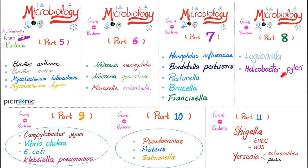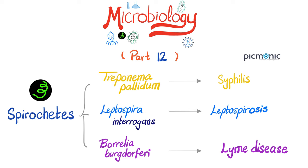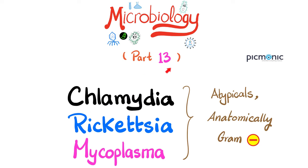H. pylori is an example of a bacterium that can lead to cancer. Do you know the viruses that can cause cancer? Comment below. In video number 9: Campylobacter jejuni, Vibrio cholerae, Escherichia coli, and Klebsiella pneumoniae. Video number 10: Pseudomonas, Proteus, and Salmonella. Video number 11: Shigella and Yersinia. Video number 12 was about the spirochetes — Treponema pallidum that causes syphilis. Keep that in mind because we'll talk about it today, especially congenital syphilis. Leptospira causes leptospirosis and Borrelia burgdorferi causes Lyme disease. And in the last video, number 13, we talked about Chlamydia, Rickettsia, and Mycoplasma.